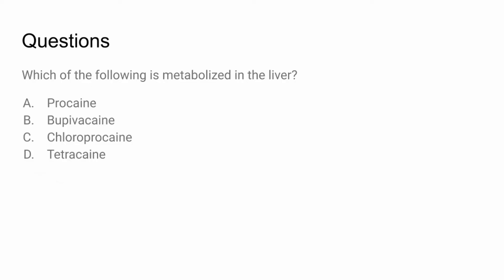Which of the following is metabolized in the liver? Procaine, bupivacaine, chloroprocaine, or tetracaine? First, we know it's amides that are metabolized in the liver and esters are metabolized by plasma pseudocholinesterase. After knowing it's an amide, we identify which option is an amide — the answer is bupivacaine, because in its name you can easily tell it has two i's as opposed to esters with one.